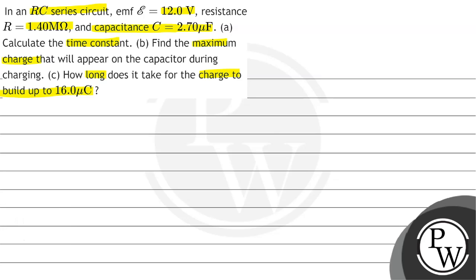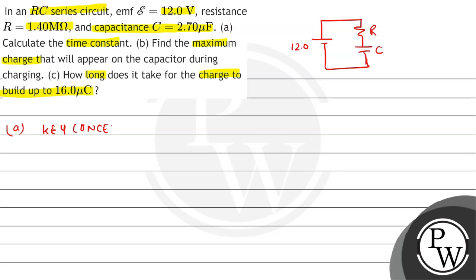This question has given us an RC circuit connected with a battery — a series RC circuit. This is R, this is C, and the EMF is 12 volts. We have to find the time constant in Part A. The key concept: the time constant for an RC series circuit, tau, is equal to R multiplied by C.